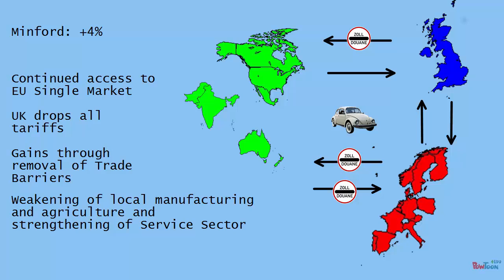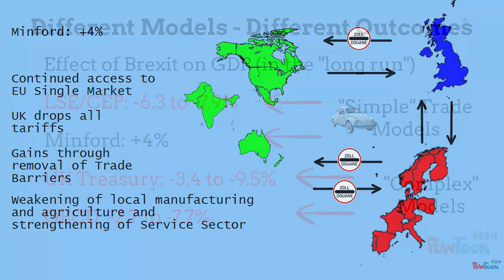It actually turns out that the LSE model also attempted to model the case where the UK drops all import tariffs, but even so they conclude Brexit will have a negative impact. So the different outcomes are mainly due to the different mechanics working in the model — for instance, whether products are differentiated (as in the LSE case, where trade naturally spreads over different countries) or whether we have a uniform product like only Beetles, in which case everyone buys from the cheapest supplier. That is what is assumed in the Minford model. Different mechanics, different assumptions, different results.